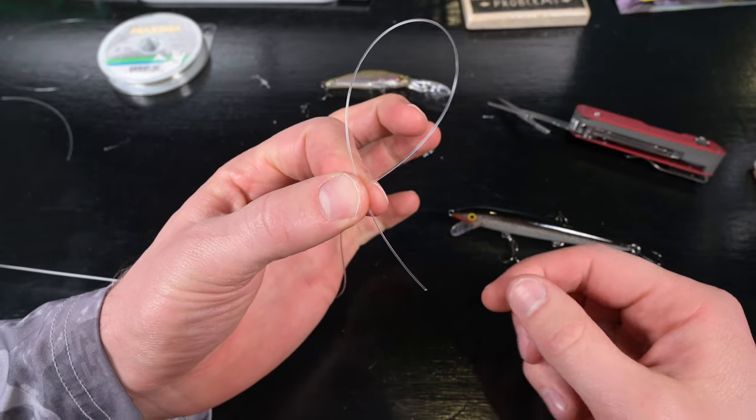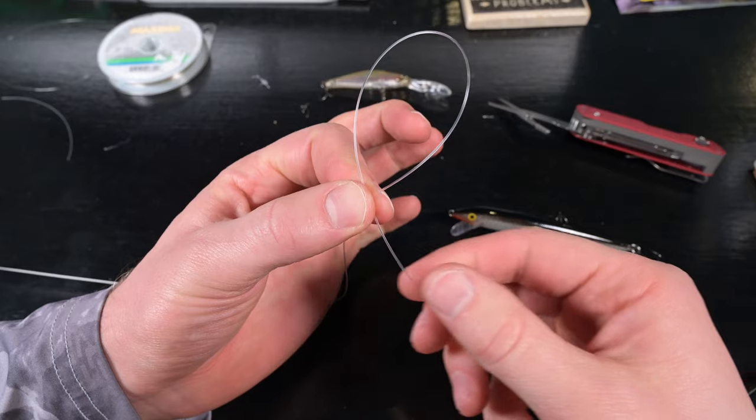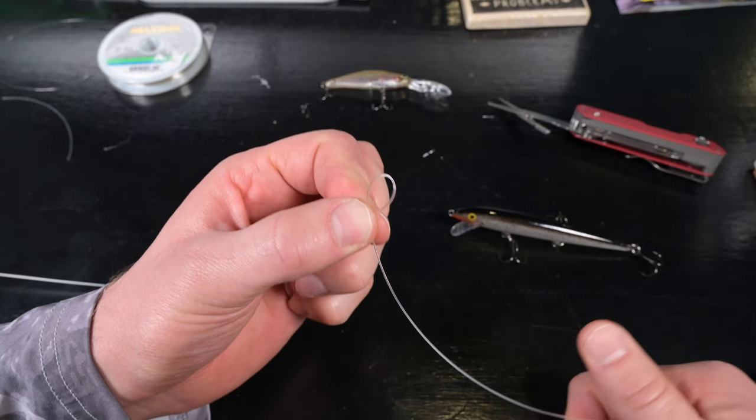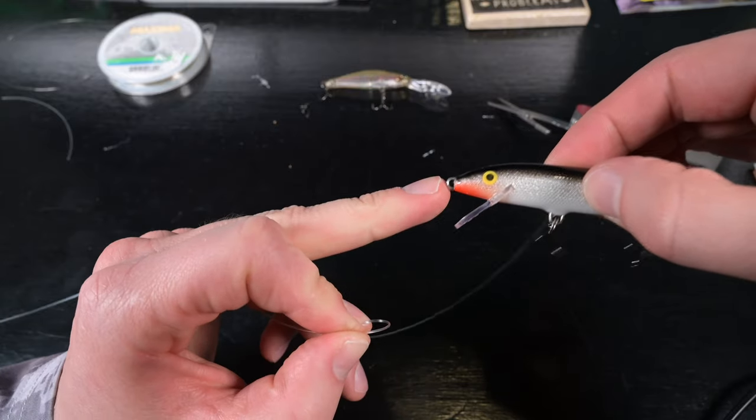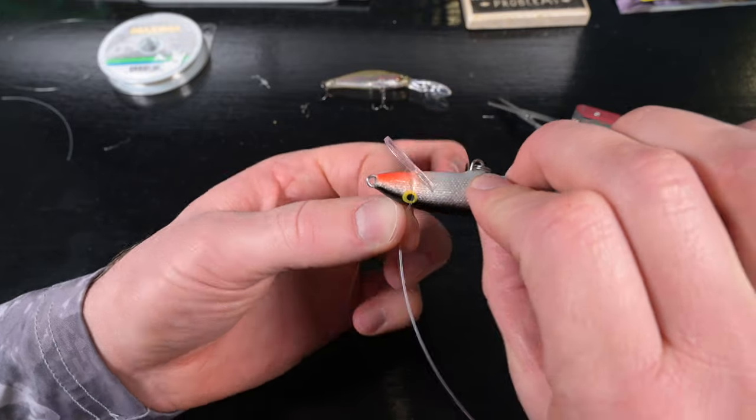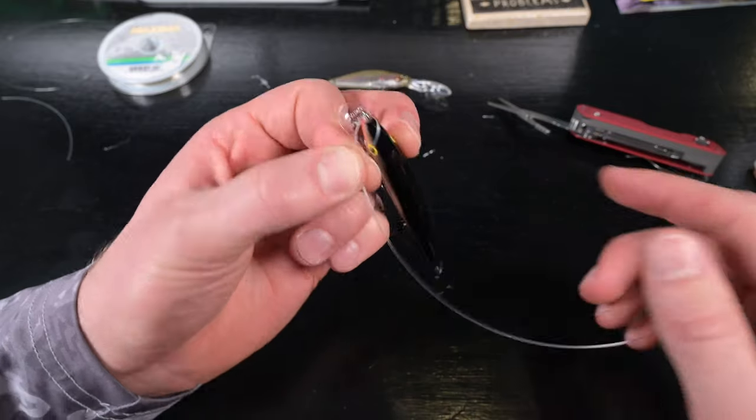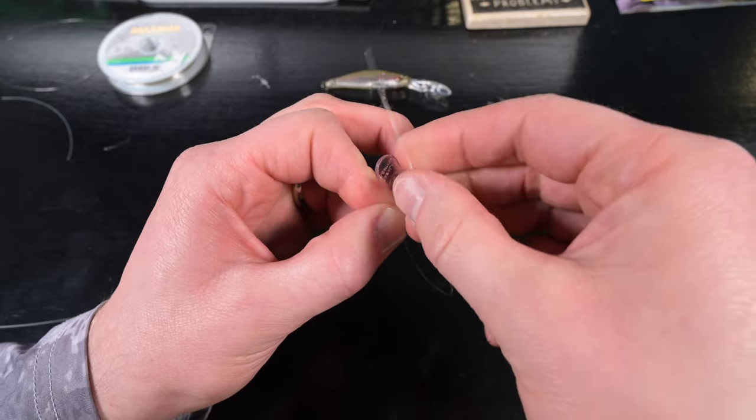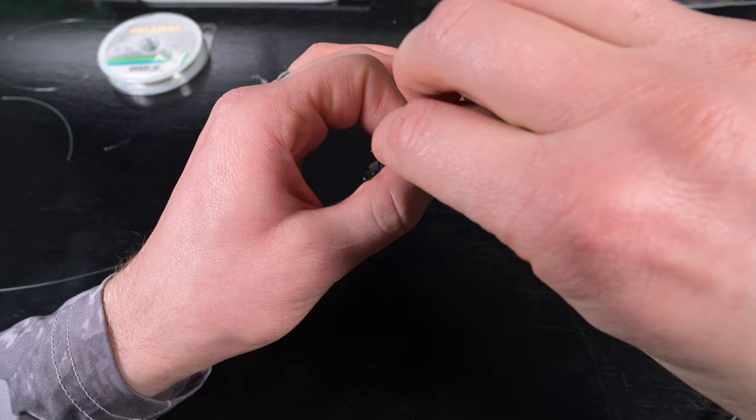I'm going to pull the bitter end down and tighten that loop up. Now I'll take the eye of the lure and insert it into the loop. Holding the lure with my middle finger, I take the bitter end and pass it through the eye, then send it through the hole in my hand and wrap it around behind.